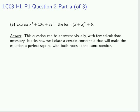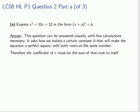Which means both roots at the same number. Therefore the coefficient of x must be the sum of that root to itself. In other words, the root added to itself. Clearly this must be 5, so a equals 5.